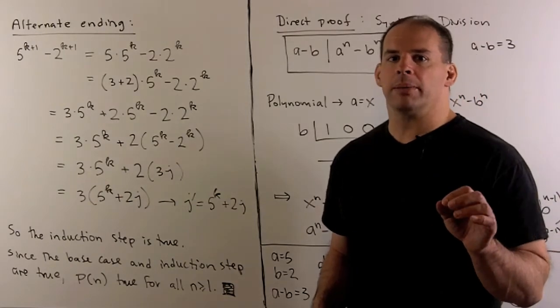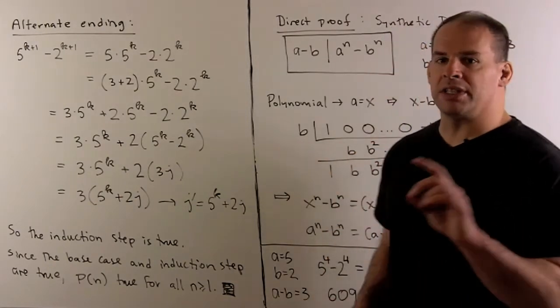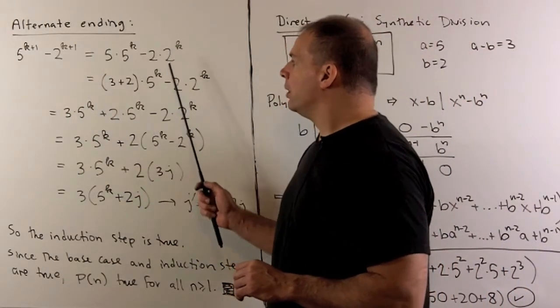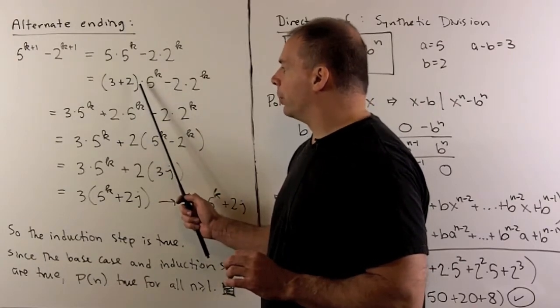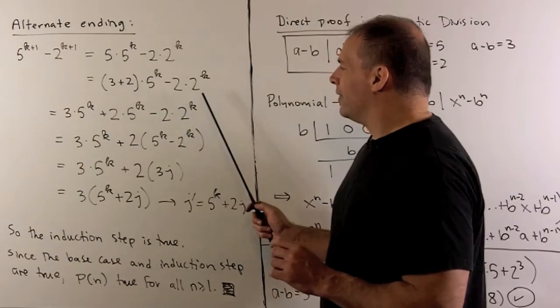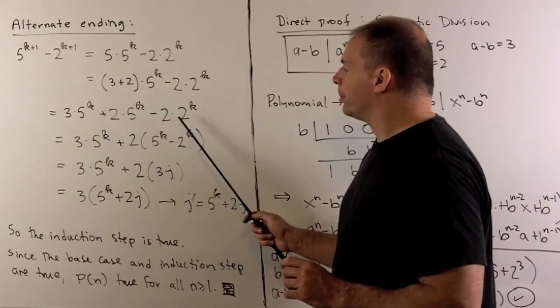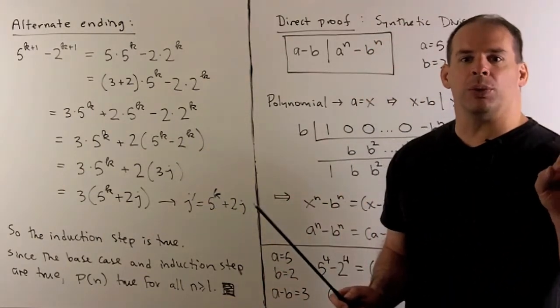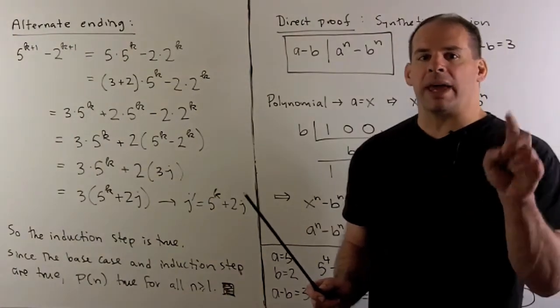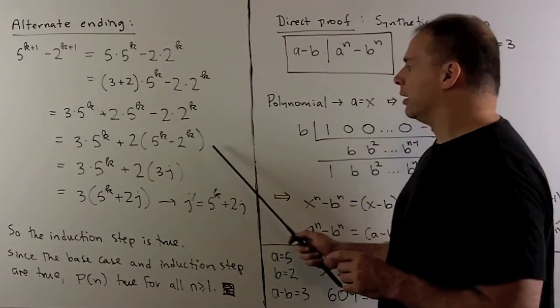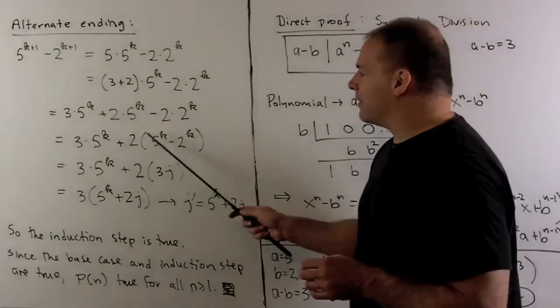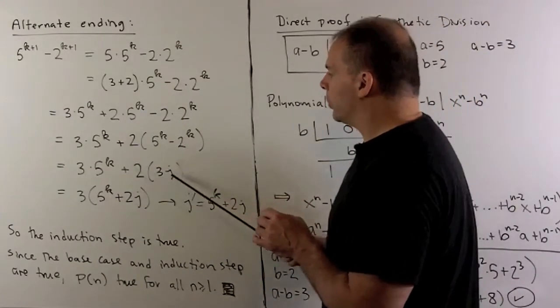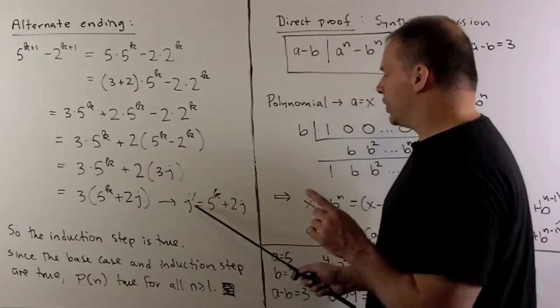Another way to see the induction step. This is essentially the same thing. It's just a different substitution. So we start as before. Pull out the 5 and the 2. But now, I'm going to write the 5 as 3 plus 2. We distribute. Then, I'm going to regroup over here by pulling out the 2. You'll notice we have 5 to the k minus 2 to the k. By our assumption, that's equal to 3 to the j. So here, instead of subbing out the 5 to the k, we're subbing out the whole thing. Note, if you just subbed out the 5 to the k, you're going to get the same exact answer. Now, from here, we can pull out the 3's. Then, we have our j prime again.